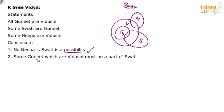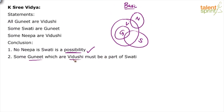Second conclusion: Some Gunit which are Vidushi must be a part of Swati. Let's verify this. This is a different type of conclusion — where some A's of B's are also C's, or some A's of B's must be C's. So A is Gunit, B is Vidushi, C is Swati.